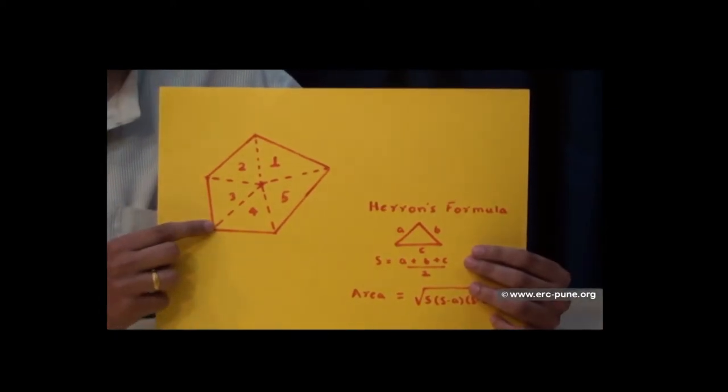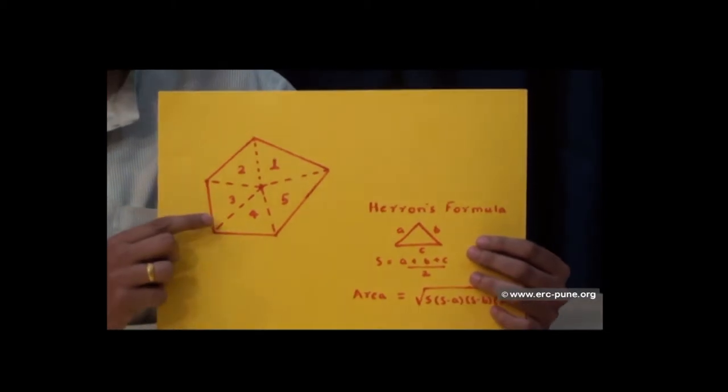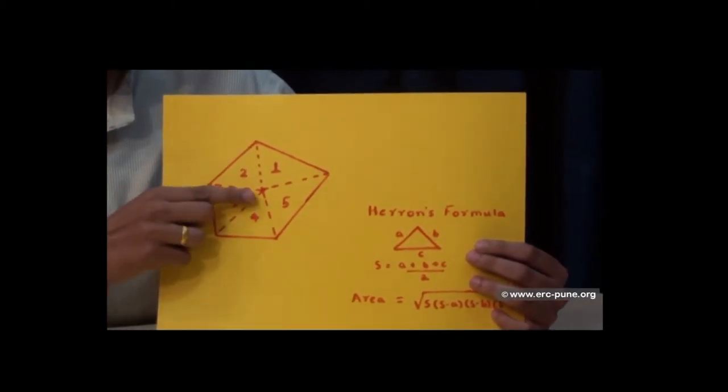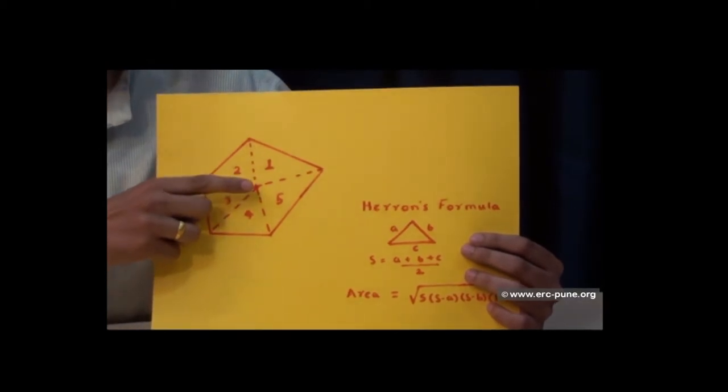So I am going to show you one example. Here is an irregular pentagon and we would like to find its area. So what we do is choose a point inside the pentagon and join all the vertices to this point.